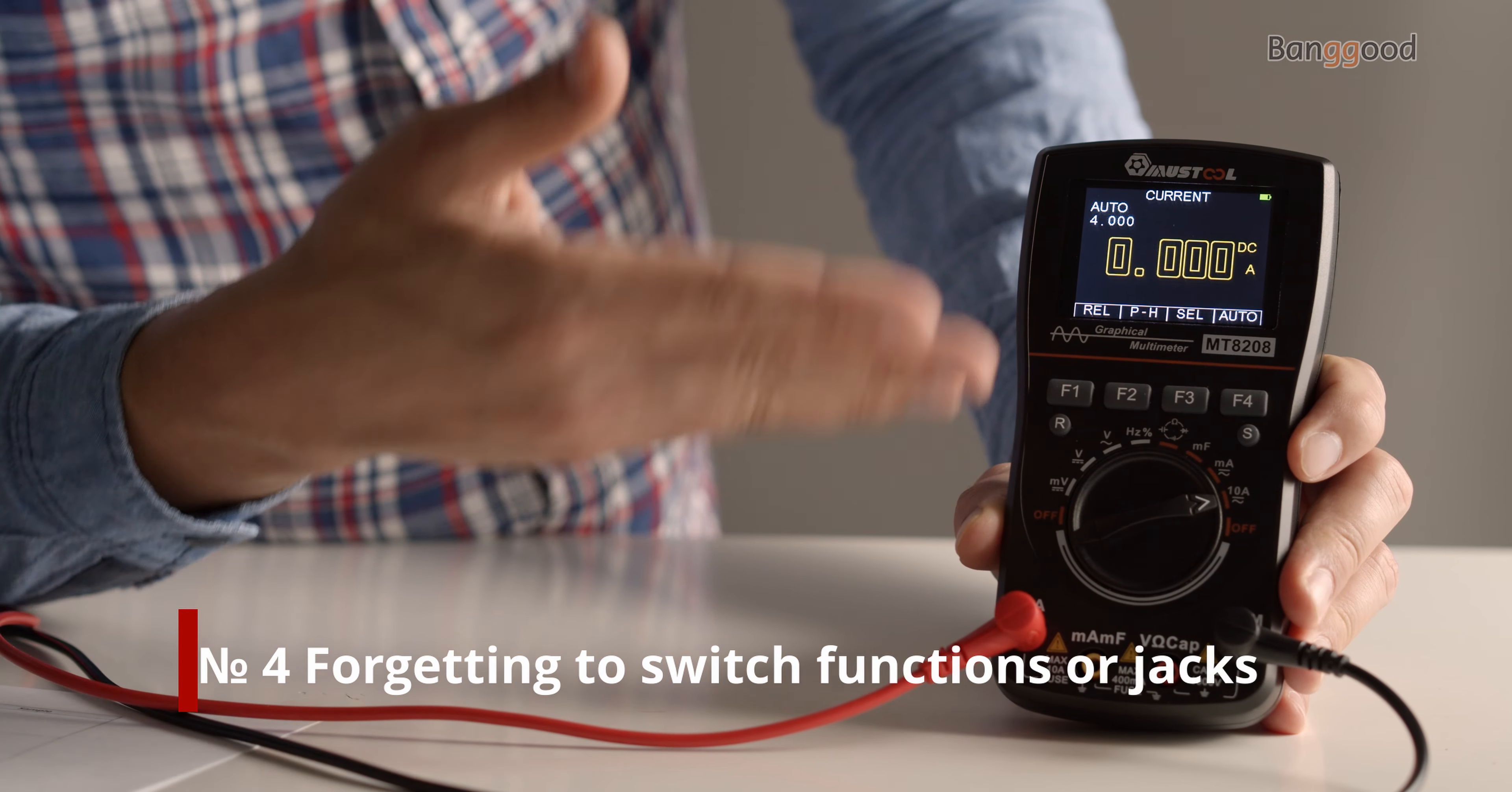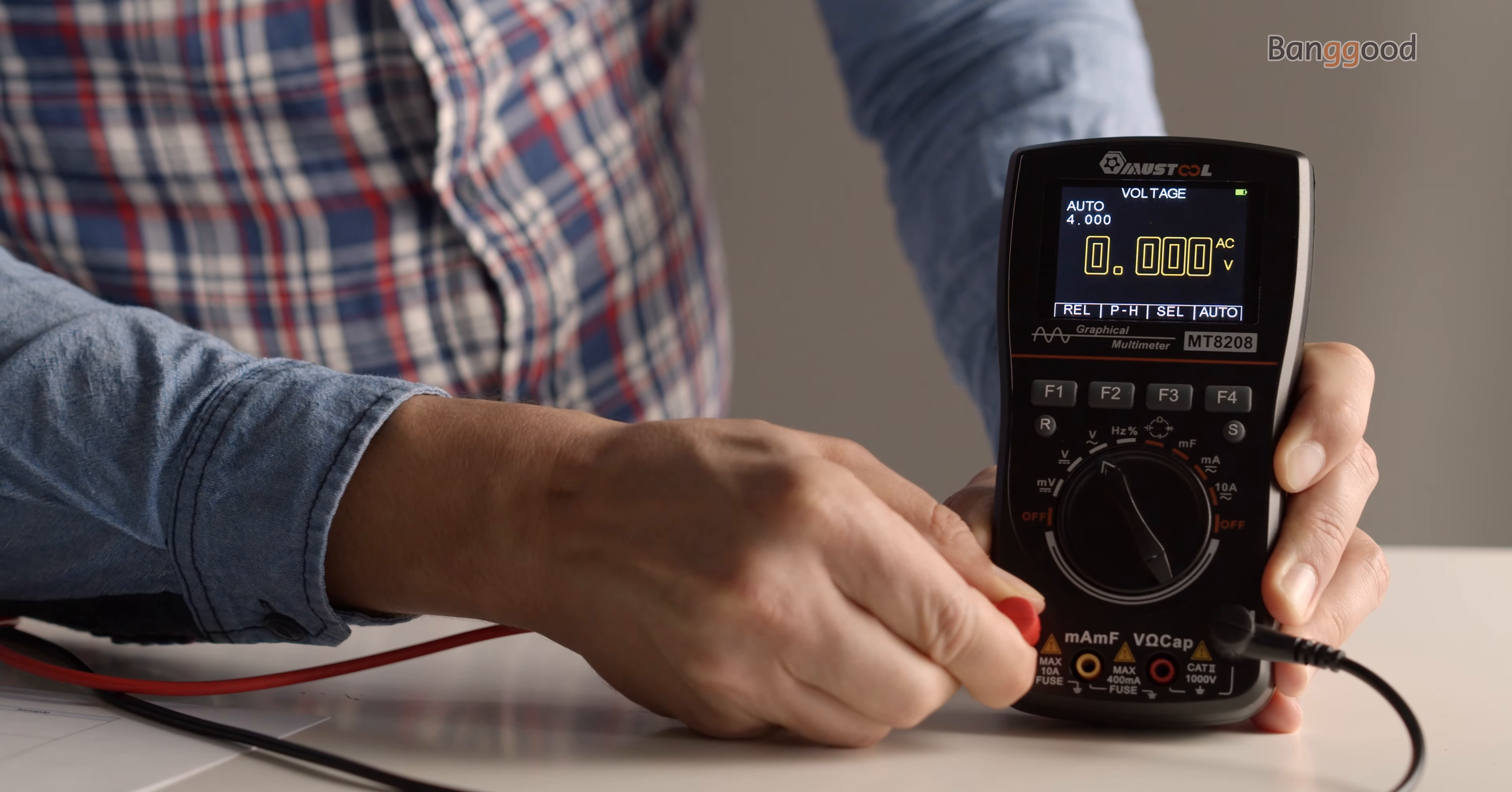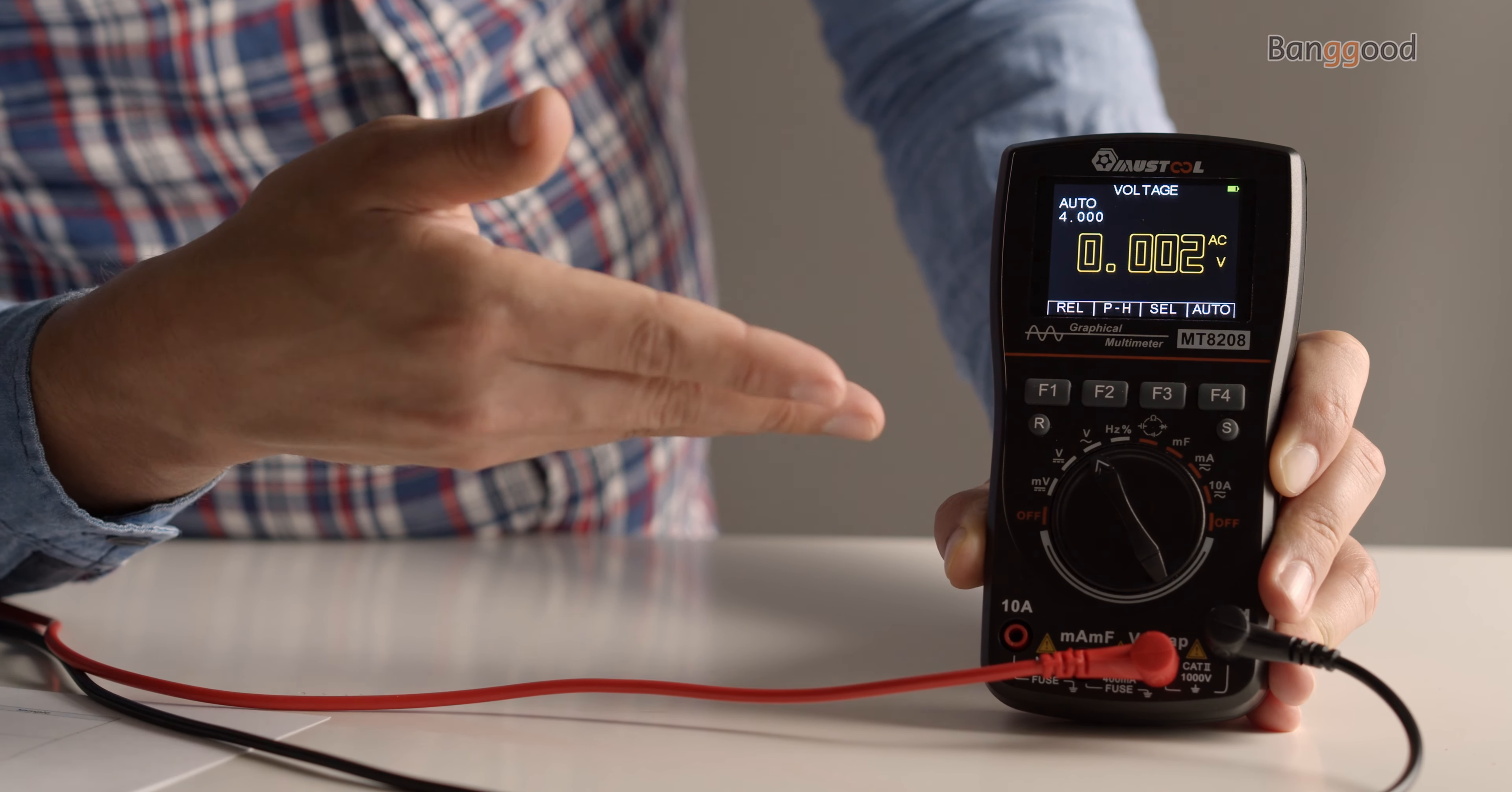Number four: forgetting to switch functions or jacks. Not remembering to switch the test leads or jacks when switching between current sensing and voltage or resistance testing. This can lead to the meter sparking or, worst case, blowing up.